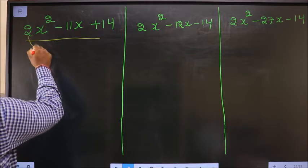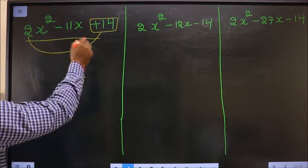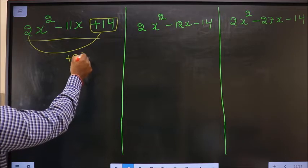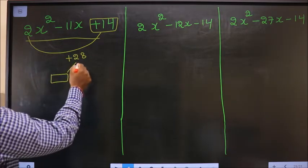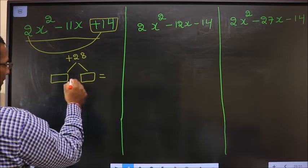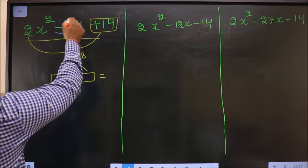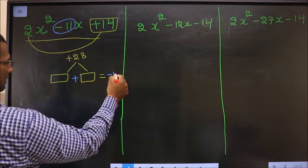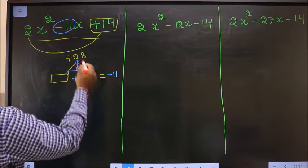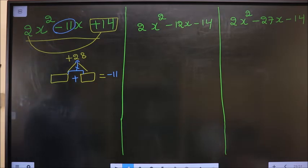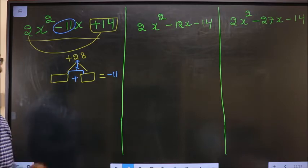Step 1: we multiply the leading coefficient with the constant. For the first expression, 2 × (+14) = +28. Next, look out for two numbers such that when you add them you get the middle number, minus 11, and when you multiply them you get plus 28.